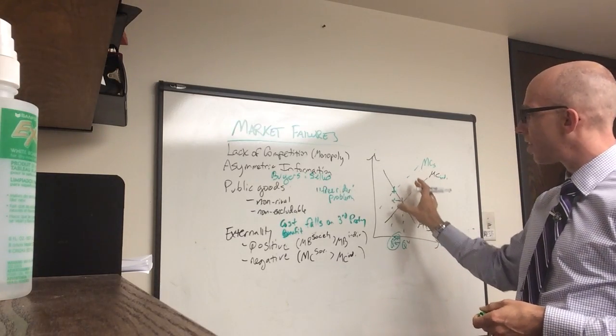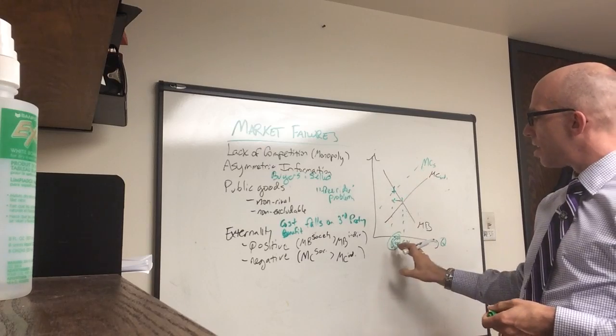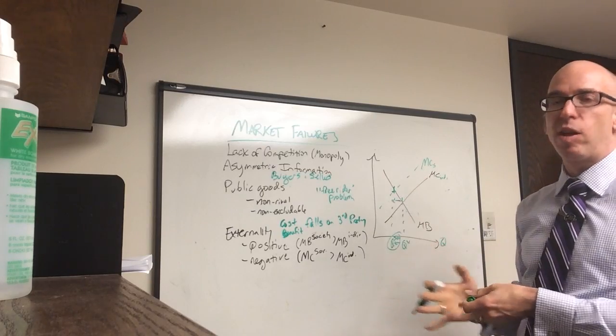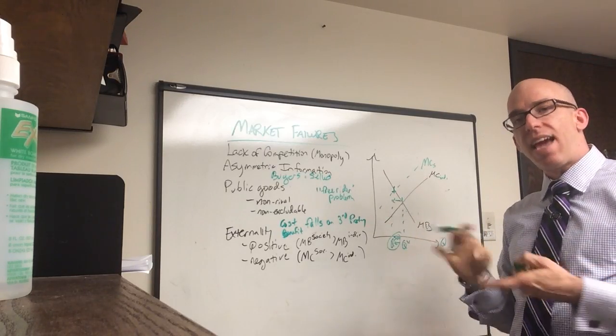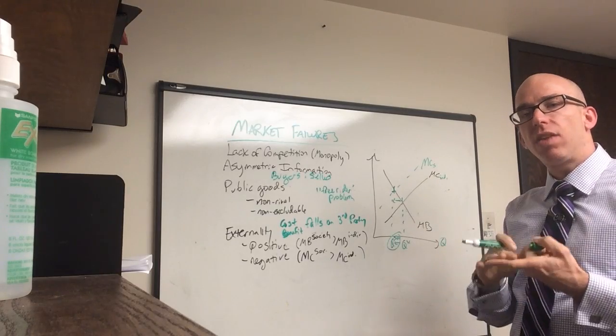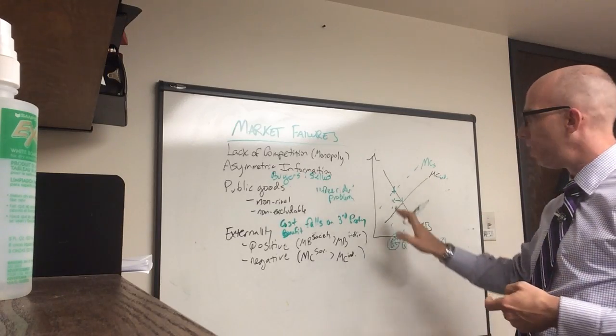So that's the negative externality: raises costs, society wishes less of a bad activity, but how do they get it to stop? Taxation, bans, other government activity where the market fails.